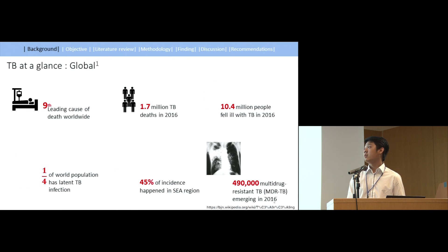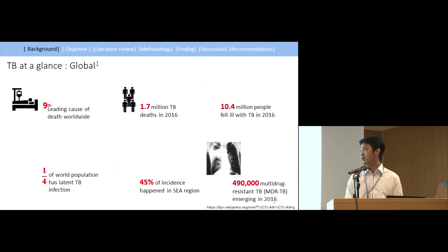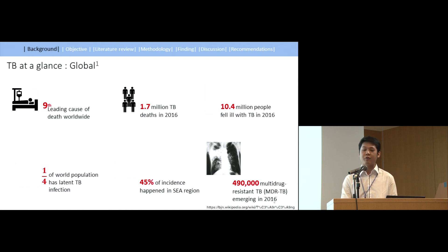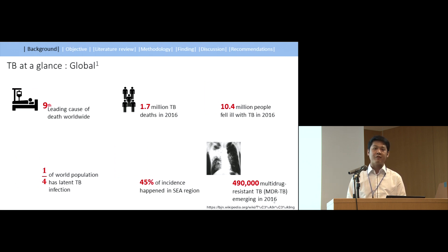This is the global burden of TB. It is currently the ninth leading cause of death, and in 2016, 1.7 million deaths were due to TB, with an incidence of 10.4 million people. Almost 45% of those incidents are from Southeast Asian regions, and nearly 500,000 multi-drug resistant TB cases occurred around the world.